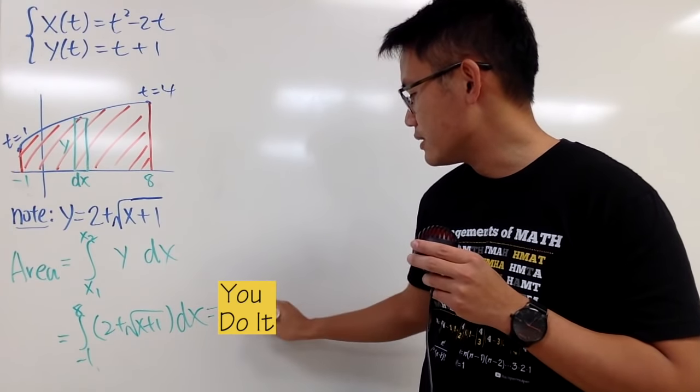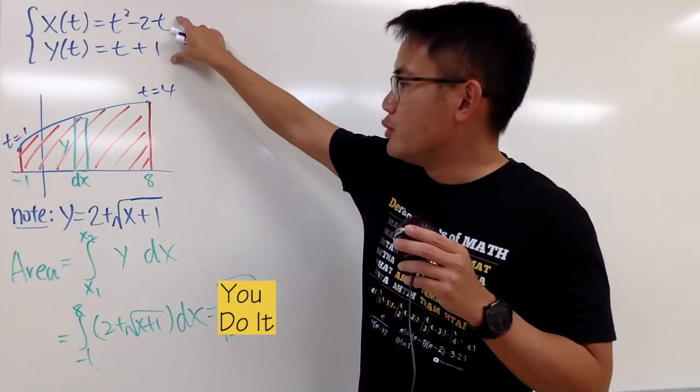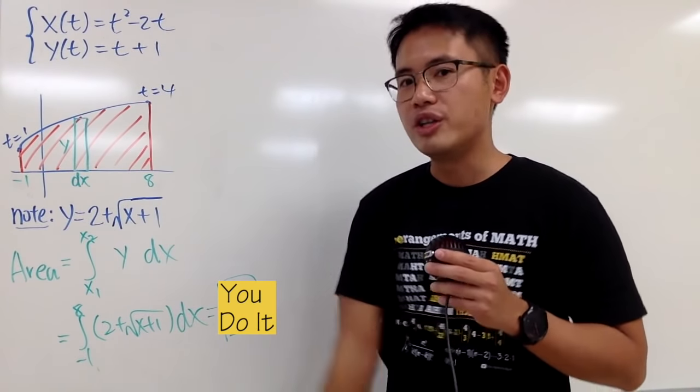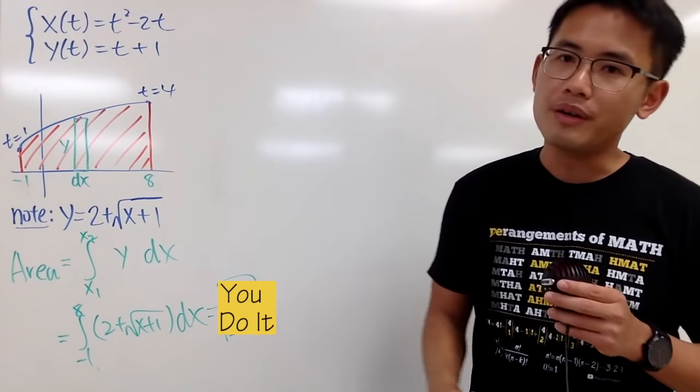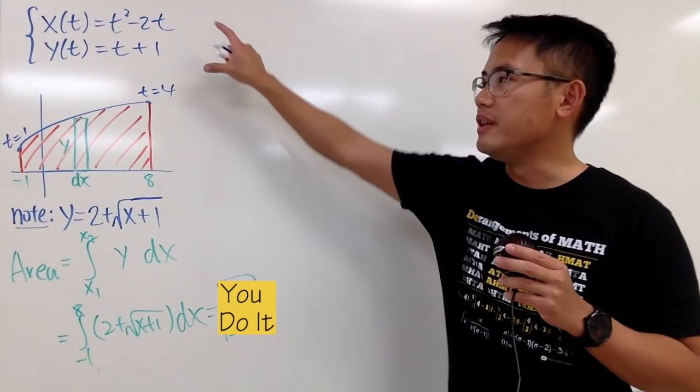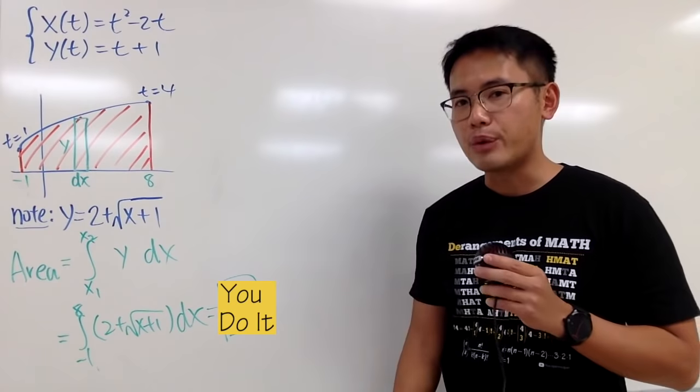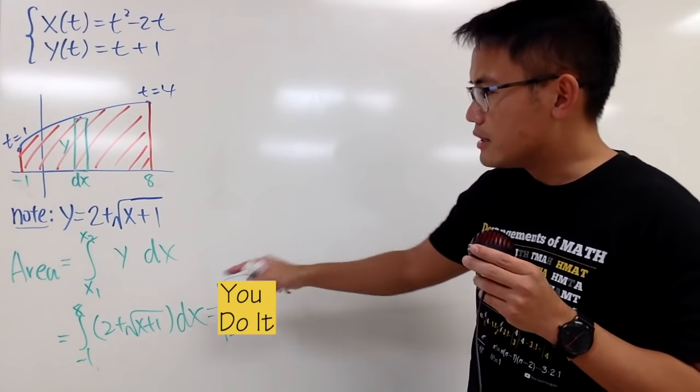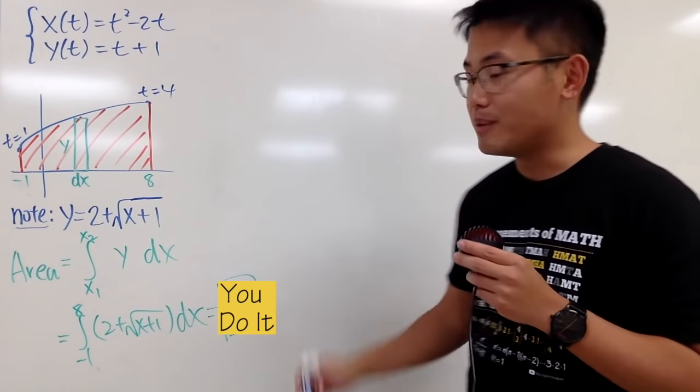Now, suppose we couldn't take the parametric equations and change that to the Cartesian equation form. Well, in that case, we really have to deal with the parametric equation and try to see how to find the area. But the idea is pretty much based on this. And now, let me show you.